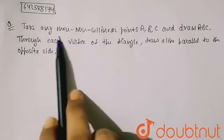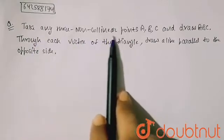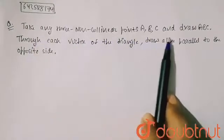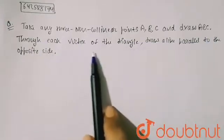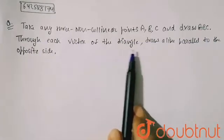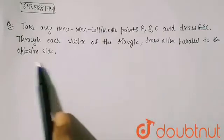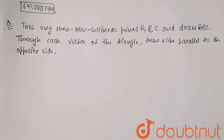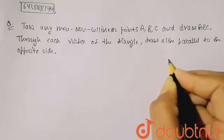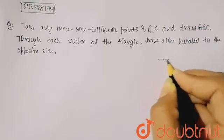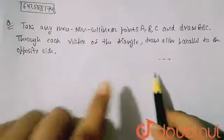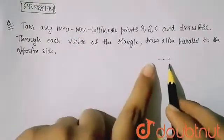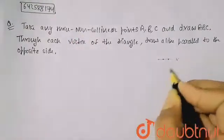In this question, we are given to take any three non-collinear points A, B, C and draw triangle ABC. Through each vertex of the triangle, draw a line parallel to the opposite side. Non-collinear points means these points don't lie on the same line.